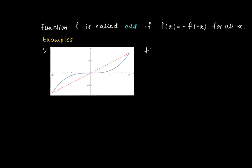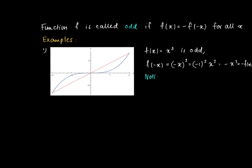Here is an example: f(x) = x³, the cubic function. This one is odd since when we plug in f(-x), this equals (-x)³. We can factor out (-1)³ times x³, which equals -x³, which equals -f(x). So f(x) = -f(-x), and this function is odd.